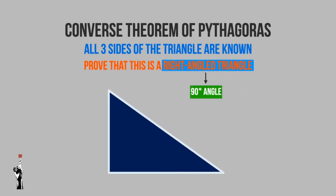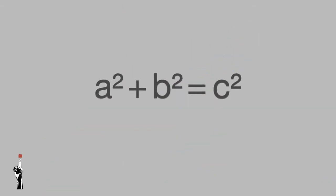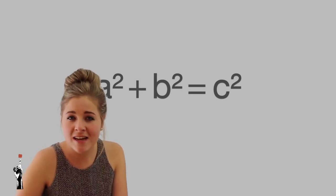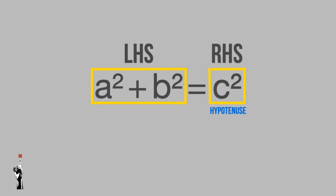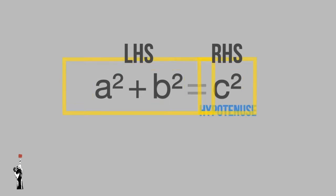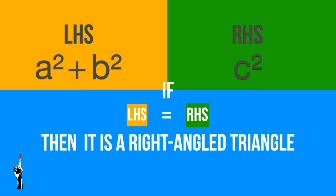That means they ask you to prove that this triangle has a 90 degree angle. For instance, if I have this triangle, I have all three sides known, but I have no idea if that angle is 90 degrees — and that is what I want to prove. To prove that a triangle is a right angle triangle, we use the Pythagorean theorem. We need to prove the left hand side is equal to the right hand side: a squared plus b squared is the left hand side, and c squared — the hypotenuse — is the right hand side. It's important to calculate the left hand side and the right hand side separately. If they are equal, that means this is a right angled triangle.